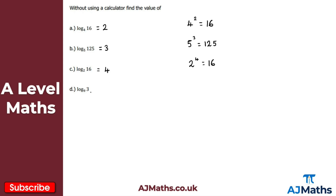For the final one, log 3 base 9 — what must the power of 9 be to give me 3? Notice that 3 is the square root of 9, so the power must be a half. 9 to the power of a half is the same as the square root of 9, which gives 3. So log 3 base 9 equals one half.